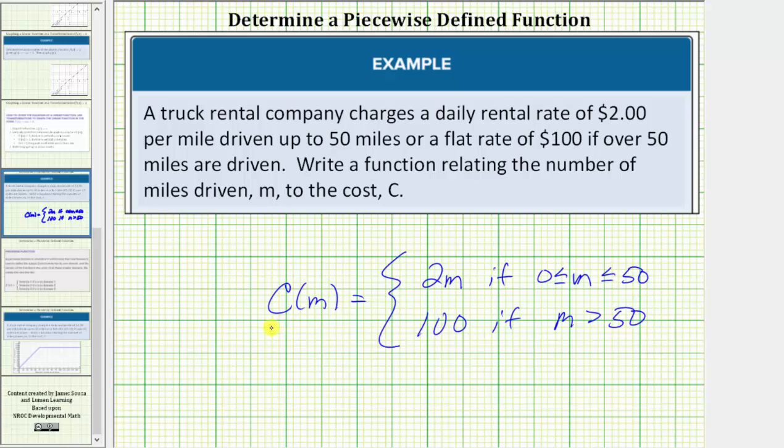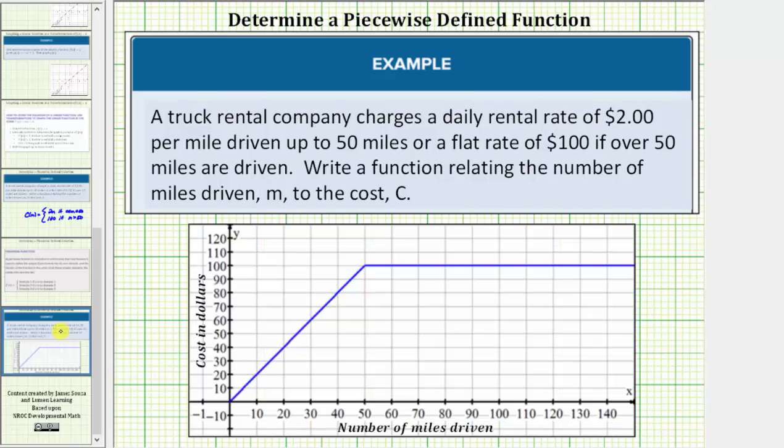Let's also look at the graph of the function c of m. Notice how the graph has two parts based upon the two formulas for the piecewise function. This part of the graph is given by the function c of m equals two m when m is greater than or equal to zero and less than or equal to fifty. Notice how here we have m equals fifty.